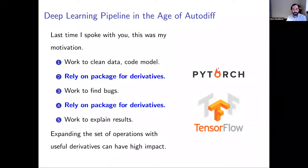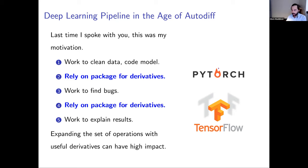In the deep learning age, in the age of automatic differentiation, this is the typical workflow of an engineer working at a research lab like DeepMind or Google Brain. They'll be working with some set of data, cleaning the data or coding up a model, implementing it in TensorFlow or PyTorch, and then relying on TensorFlow or PyTorch to compute the derivatives of some loss function for their model. They run some optimization, and inevitably something doesn't work.